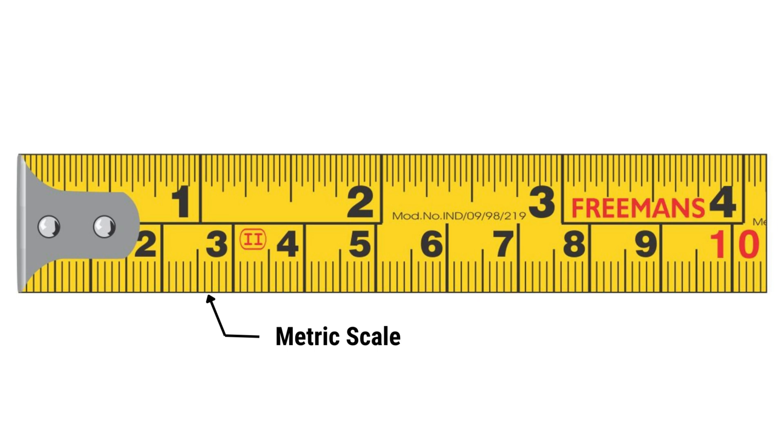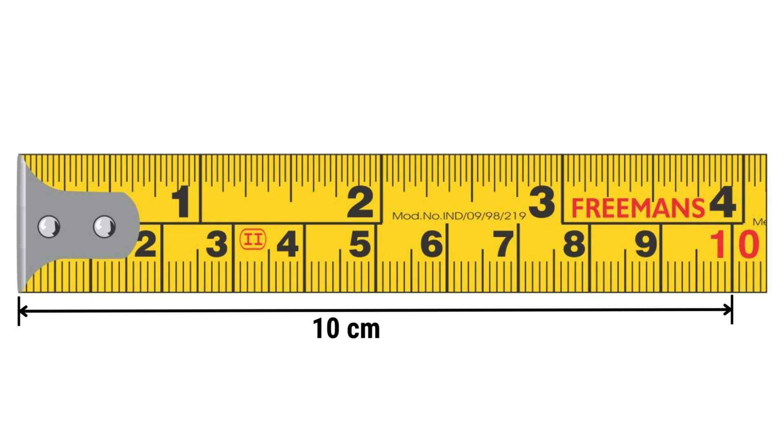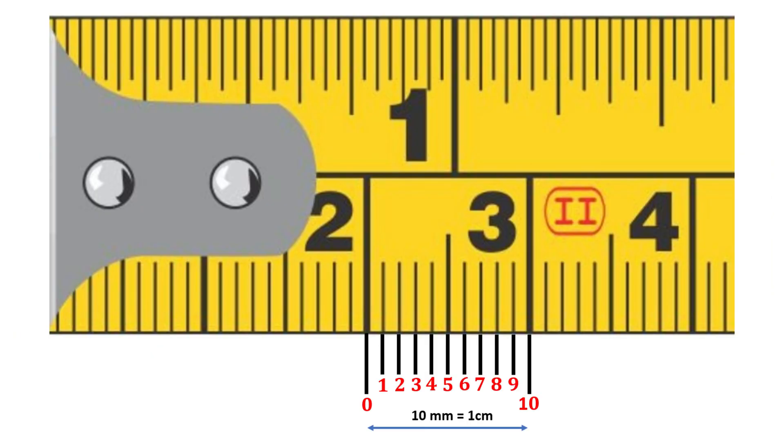Now on a metric scale, each large number represents a full centimeter. If you need to measure 10 centimeters, just count to the 10th mark. Each centimeter is divided into 10 millimeters, so every small mark represents 1 millimeter. Knowing these divisions is crucial for engineering and construction measurements.